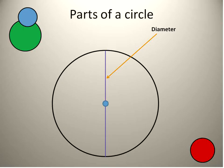You can draw diameters at all different angles. The diameter does not need to be going up and down. It can be in any direction as long as it goes from one point of the circle to another point of the circle and passes through the center.